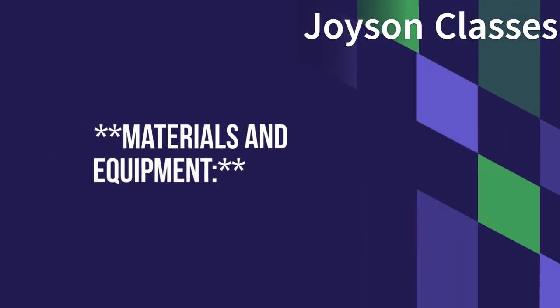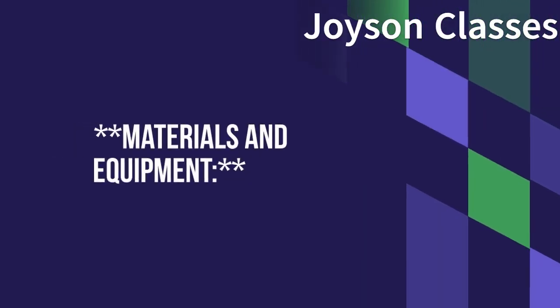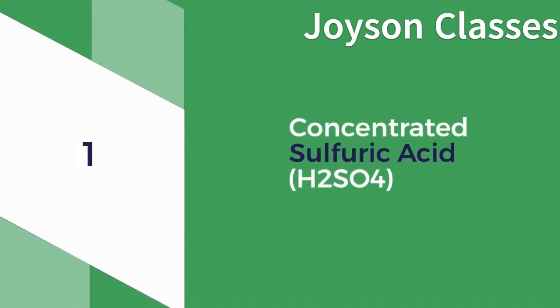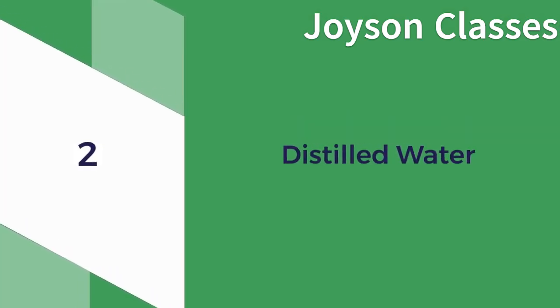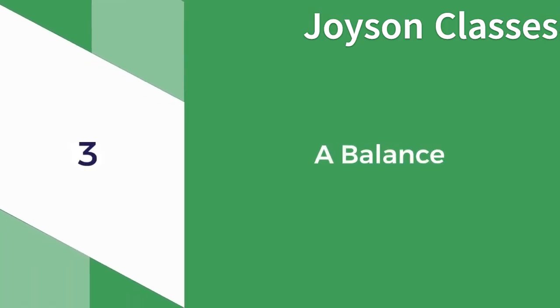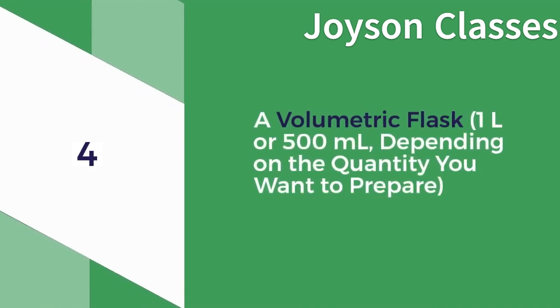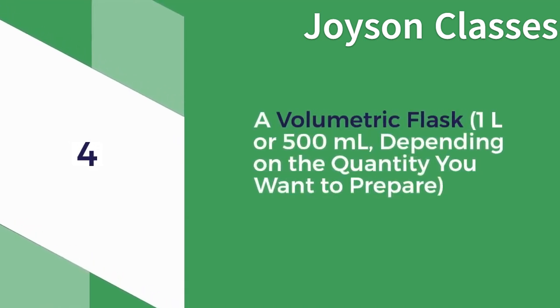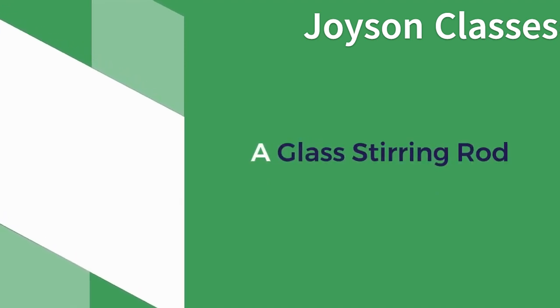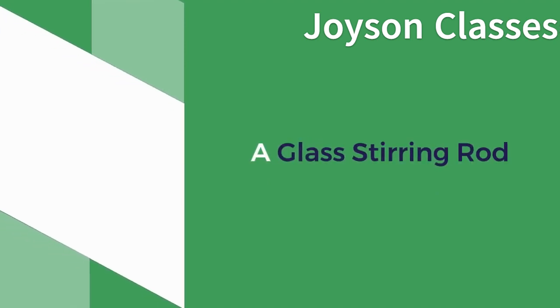Materials and Equipment: 1. Concentrated Sulfuric Acid, H2SO4. 2. Distilled Water. 3. A Balance. 4. A Volumetric Flask — 1L or 500ml, depending on the quantity you want to prepare. 5. A Glass Stirring Rod.